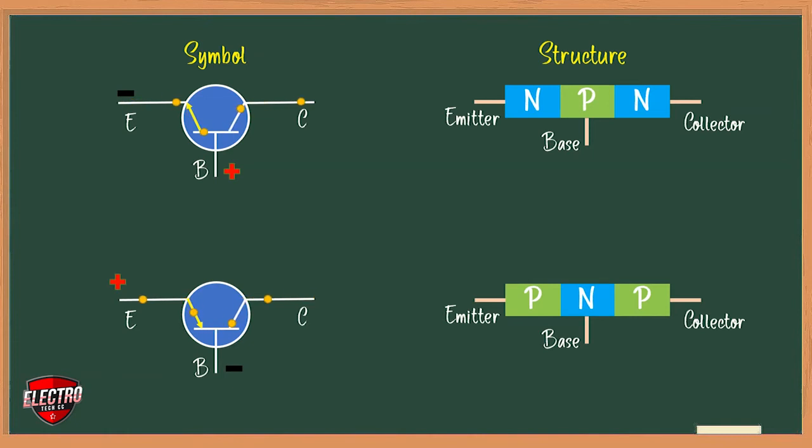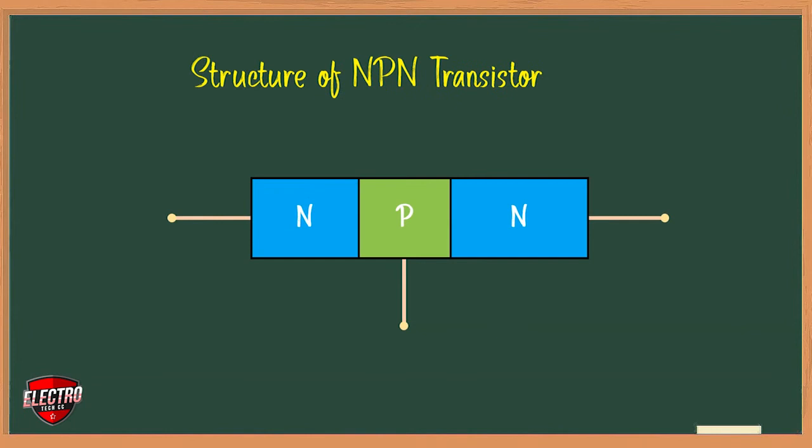Now let us discuss individual sections of the transistor. First one, that is emitter. It forms the left-hand section or region of the transistor as shown in the figure. It is highly doped than any other region because its main function is to supply majority charge carriers, either electrons or holes, to the base.